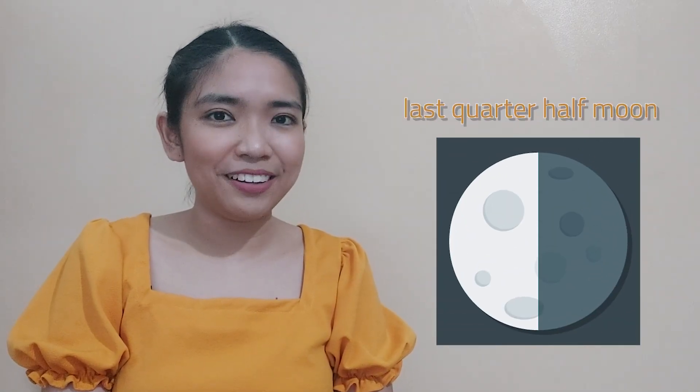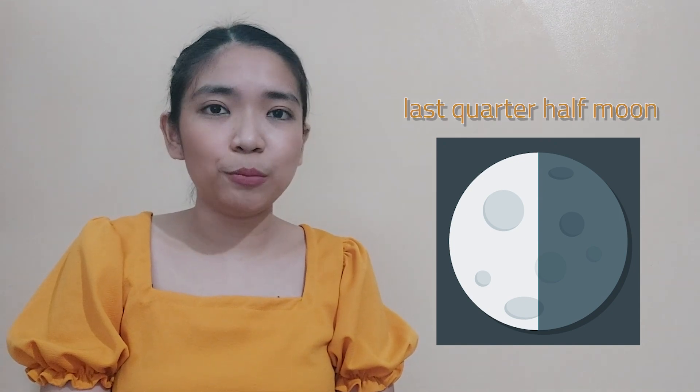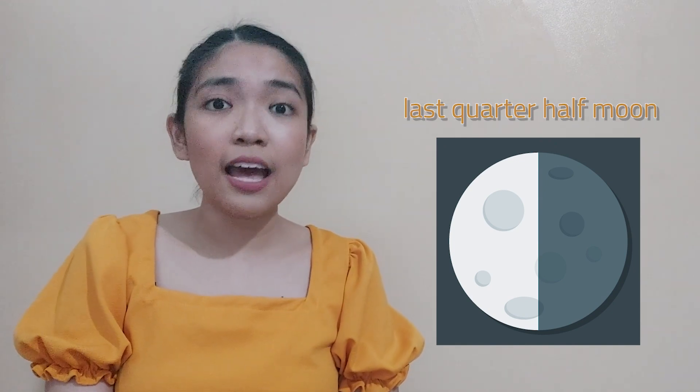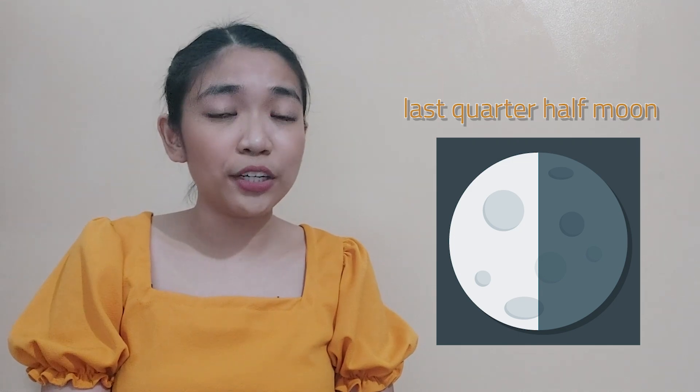Next is the last quarter half moon. Here, we see one-half of the moon's disk and the left side of the moon lit. This is one-quarter of the entire moon's surface. The last face is the waning crescent moon, when we can see only a sliver of the moon's disk on the left-hand side.